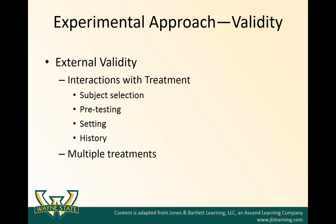External validity has to do with how generalizable are the study results to the actual population and the clinical population this treatment would be used in. There are a variety of things that could affect this external validity, and you can go to the textbook to read specifically about these. They mainly have to do with interactions with treatment — subject selection, pretesting, setting, history, and multiple treatments.